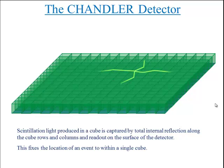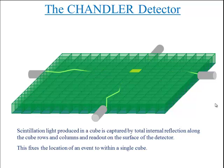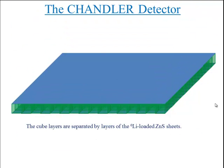Scintillation light produced in a cube is captured by total internal reflection along the cube rows and columns and is read out on the surface of the detector. This fixes the location of an event within a single cube. Cube layers are separated by layers of the sheets.